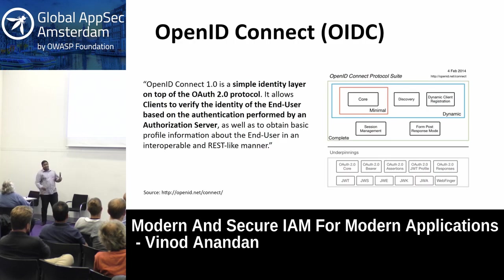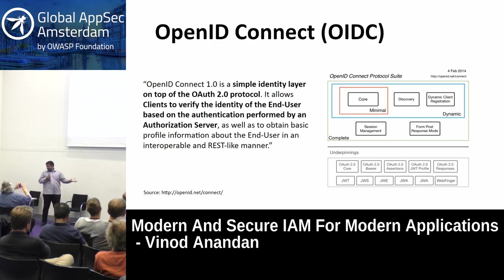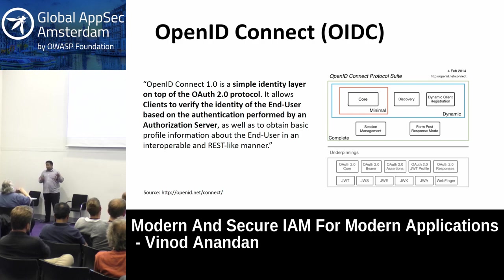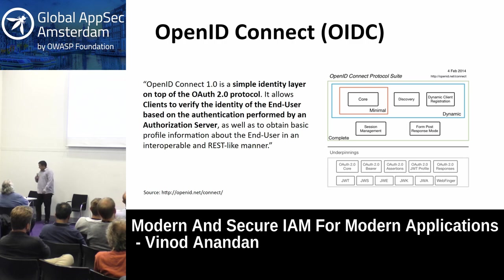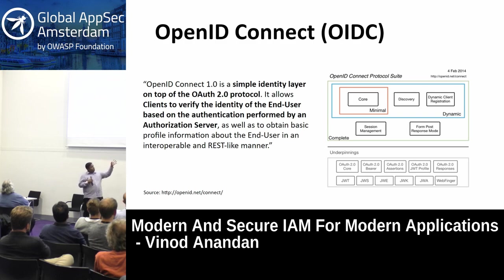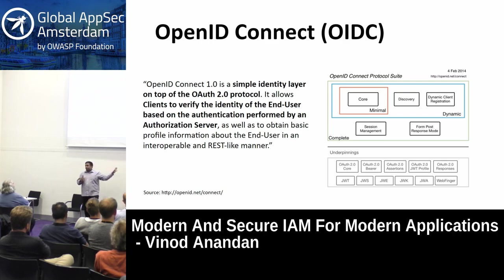OpenID Connect is a way to implement federated identity and access management. As per the OpenID Foundation's definition, OpenID Connect is a simple identity layer on the OAuth 2.0 protocol. It allows clients to verify the identity of end users based on authentication performed by the authorization server. As you can see in the underpinning, there is OAuth and JWT, along with other OAuth protocol suite components inside OpenID Connect — OpenID Connect builds on many protocol stacks in the OAuth protocol.